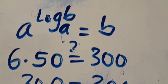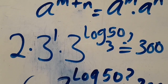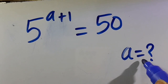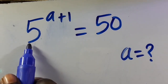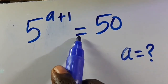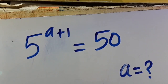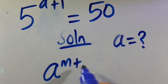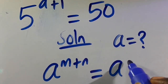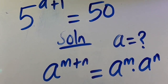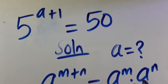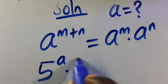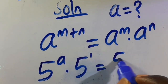And here are the steps. Now we want to find the value of a, given that 5 to the power of a plus 1 equals 50. Let's have the solution. When you have a to the power of m plus n, this equals a to the power of m times a to the power of n. By applying this theorem, we are going to have 5 to the power of a times 5 to the power of 1 equals 50.